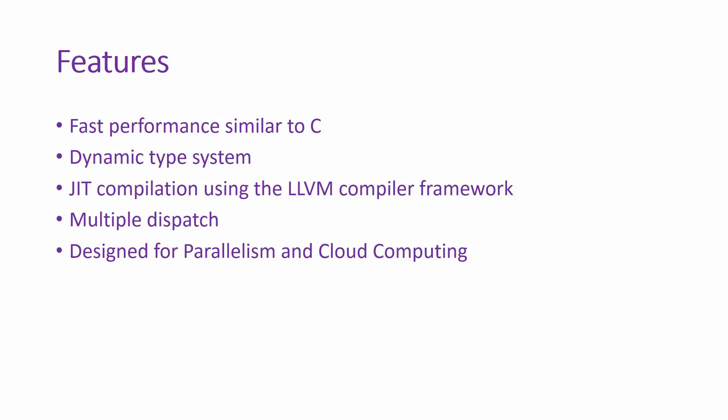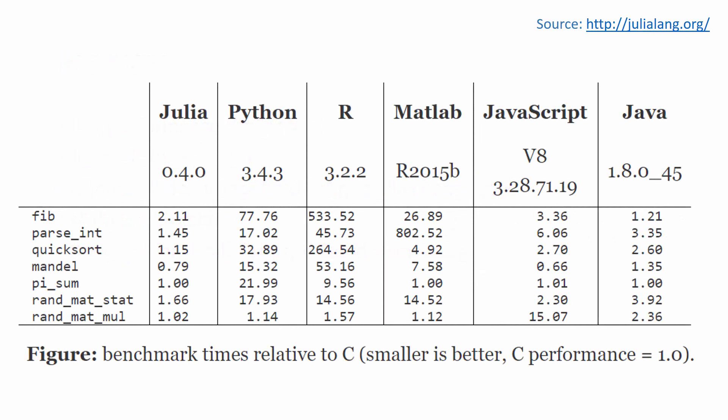Here are some of the benchmarking results taken from julialang.org website. They ran these benchmarks on some of the basic functions. So just look at this quicksort. Here the number one means the performance of C, so Julia gives 1.15 which is very similar to C.